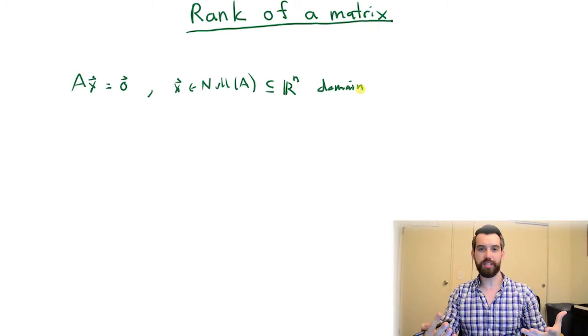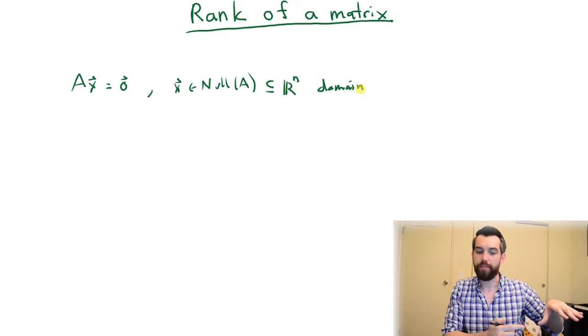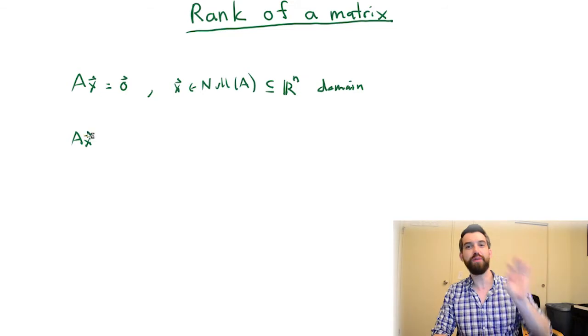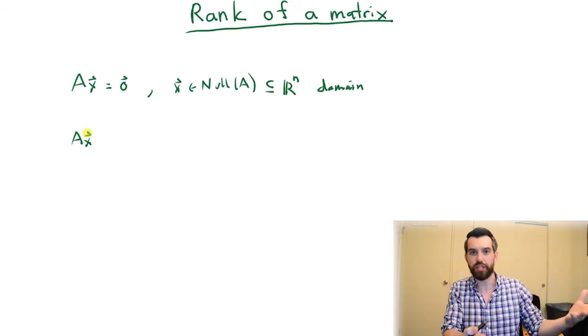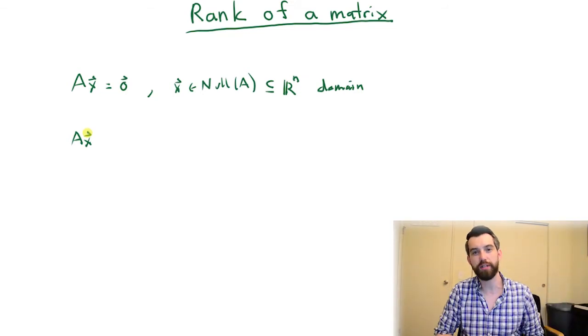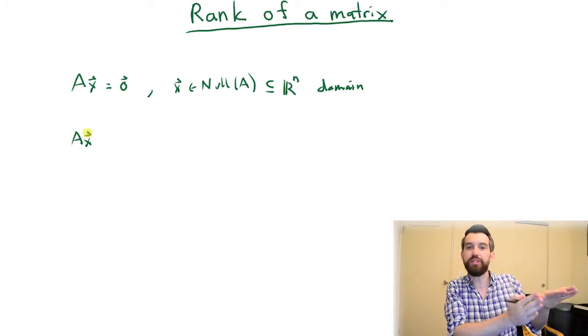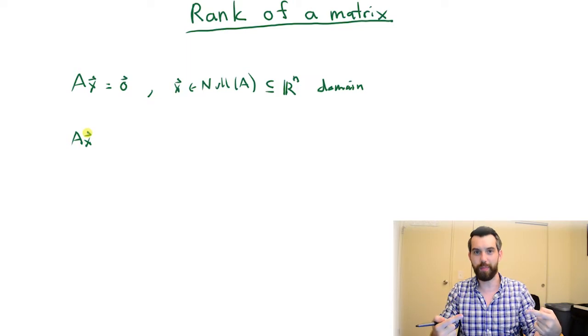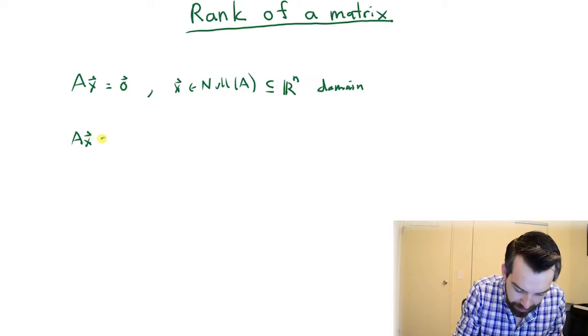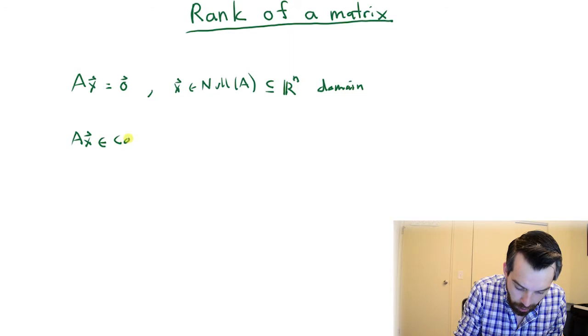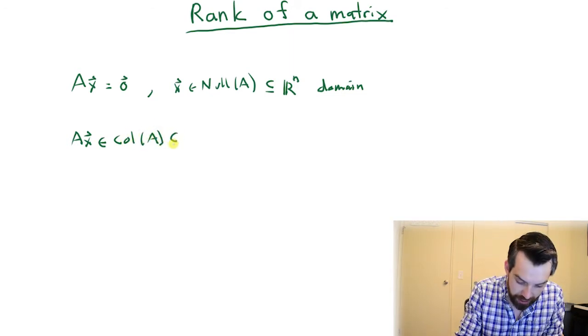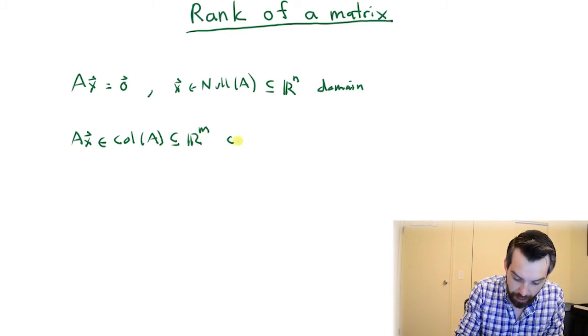I can also see what happens in the codomain. Ax is some vector. It might be zero, but it might be non-zero as well. Generically, it's going to be non-zero. This vector, the image of the vector x, is something that lives in the column space of A. So Ax itself is going to live in the column space of A, and this is going to be a subset of R^m, or in other words, a subset of the codomain.